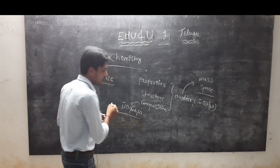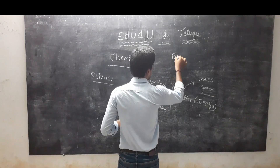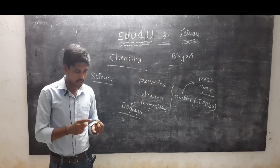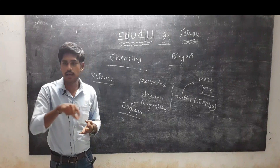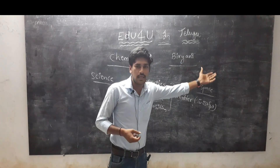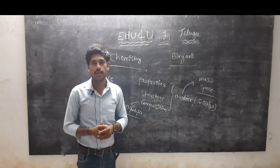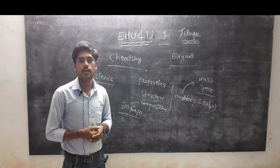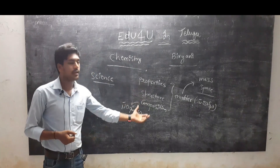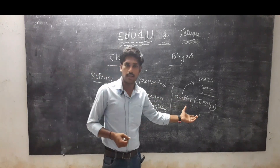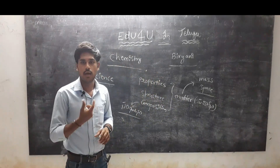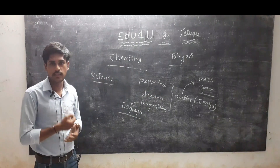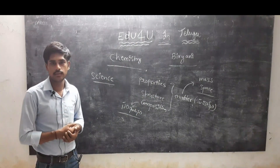Next, composition of matter. Composition means what something is made of. For example, biryani — you can prepare biryani with rice, water, oil — so this list is the composition. That compound is the composition. So properties, structure, and composition of matter — that is chemistry. I hope you understand well. Chemistry is the branch of science in which we study the properties, structure and composition of matter.